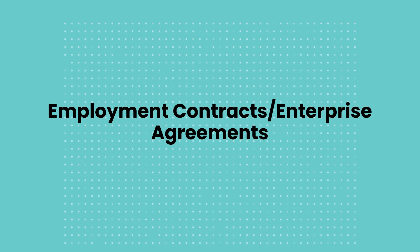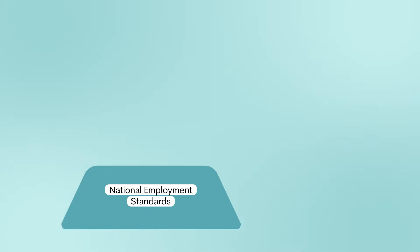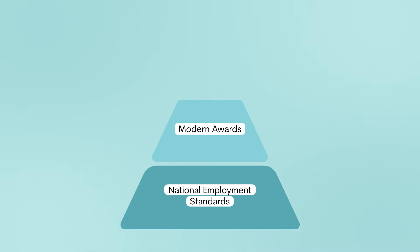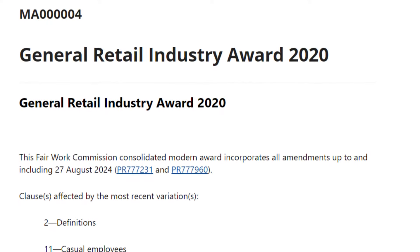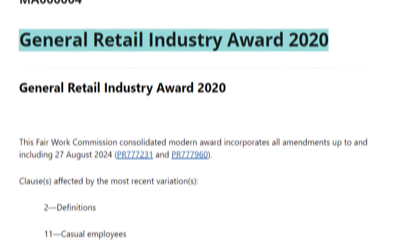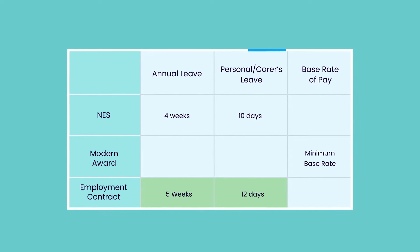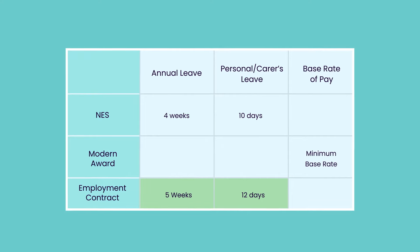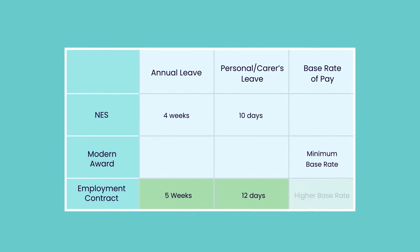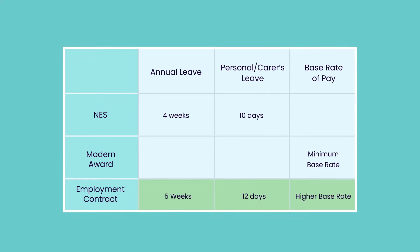Now, what happens when you have your own employment contracts or enterprise agreements? Well, these can provide entitlements on top of the NES and modern awards, but they can't undercut the minimum standards set by the NES. For example, let's say you're an employer in the retail industry covered by the General Retail Industry Award 2020. You might offer five weeks of annual leave instead of the four weeks required by the NES, 12 days of paid personal or carer's leave per year rather than the 10 days mandated by the NES, or a higher base rate of pay than the minimum set out in the General Retail Industry Award.